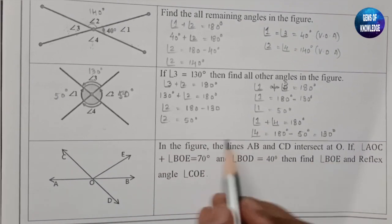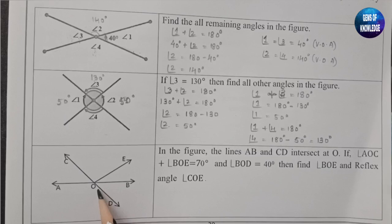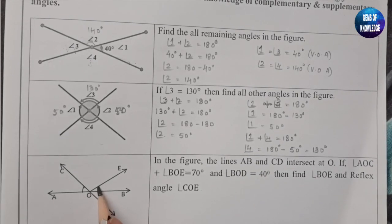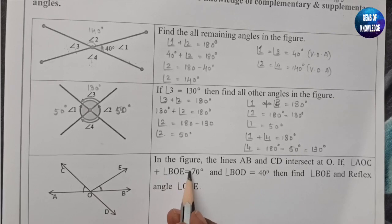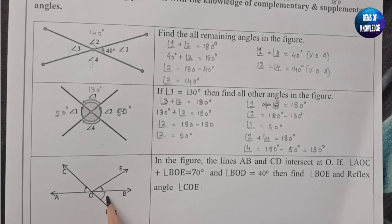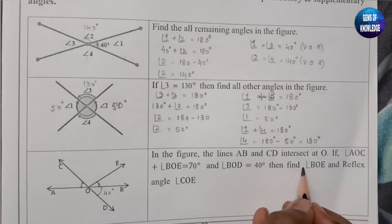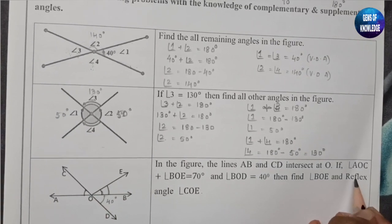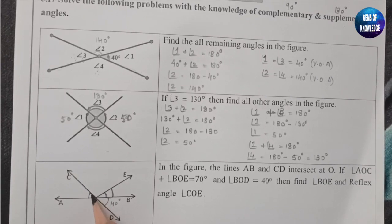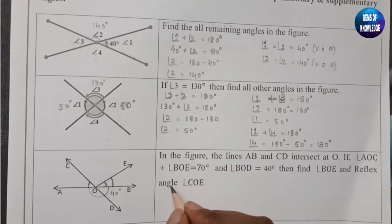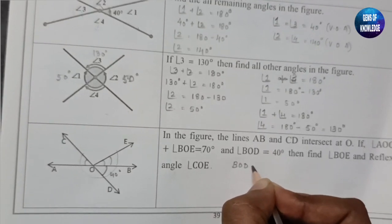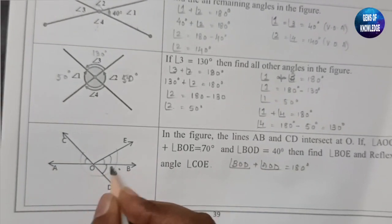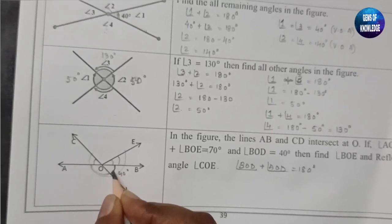For the next question: in the figure, lines AB and CD intersect at point O. If angle AOC plus angle BOE together equals 70 degrees, and angle BOD equals 40 degrees, we need to find angle BOE and the reflex angle COE. First, angle BOD plus angle AOD equals 180 degrees because AB is a straight line.